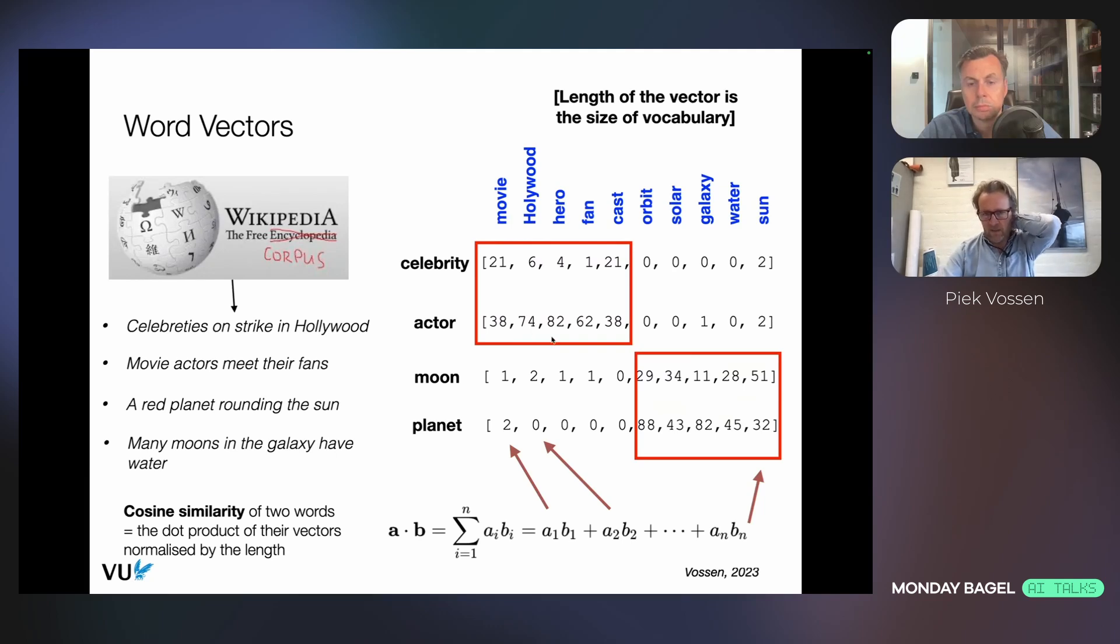There is a very simple mathematical formula where you can derive the similarity of these two representations, which is called cosine similarity, by taking the dot product for each position here. A position represents the occurrence of a word. So that's a dimension, as they call it. There's one dimension representing a movie, another one for Hollywood and hero. You can combine them, and if you add that up, you get a score which tells you how similar these two concepts are on the basis of how we talk about them.